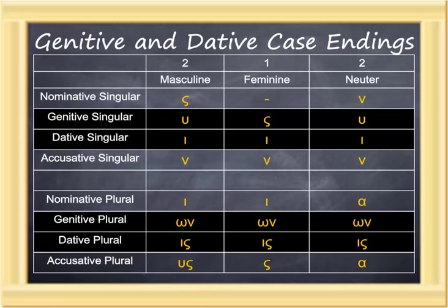This slide shows the entire case ending chart for the first and second declensions. Typically, case ending charts list genitives and datives between the nominative and accusatives: nominative, genitive, dative, accusative — singular, then the same pattern for plural. The new endings we are learning are: for the genitive singular — upsilon, sigma, upsilon; for the dative singular — iota, iota, iota; for the genitive plural — omega-nu, omega-nu, omega-nu; and for the dative plural — iota-sigma, iota-sigma, iota-sigma. In some ways these case endings are easier because there is so much repetition.